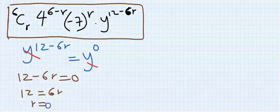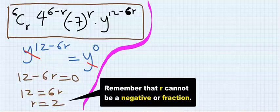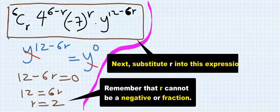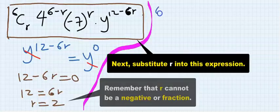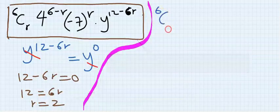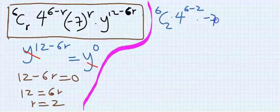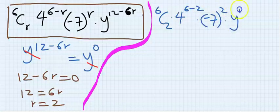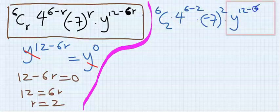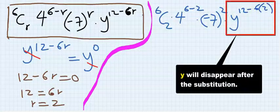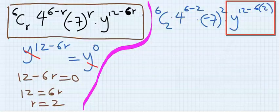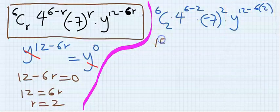Step three: put r equals 2 back into the formula. We get six-combination-two times four to the power of (six minus two) times (minus seven) to the power of two times y to the power of (12 minus 6 times 2). The y variable will always disappear after substitution. Six-combination-two gives you 15.